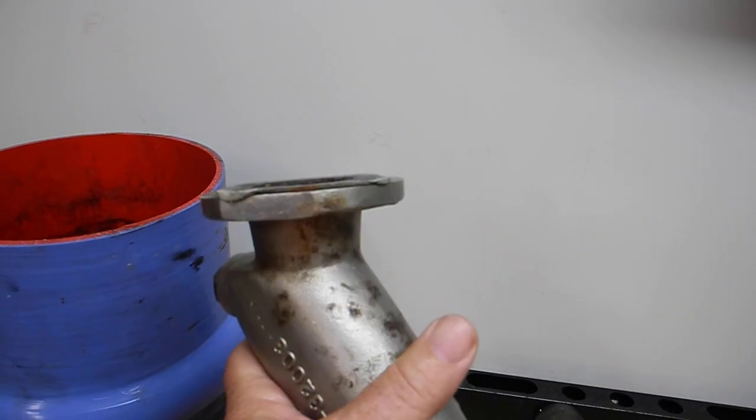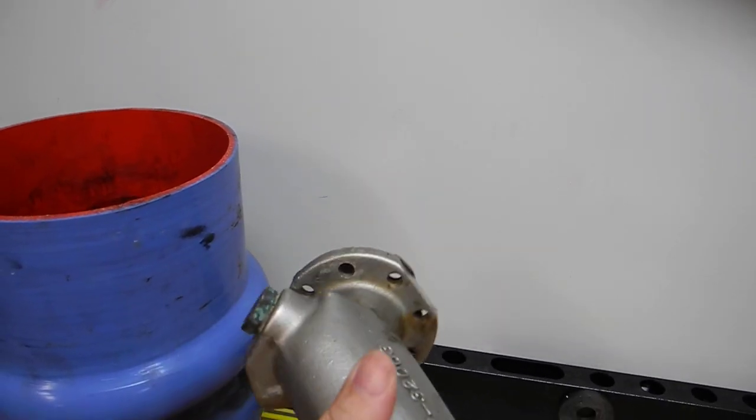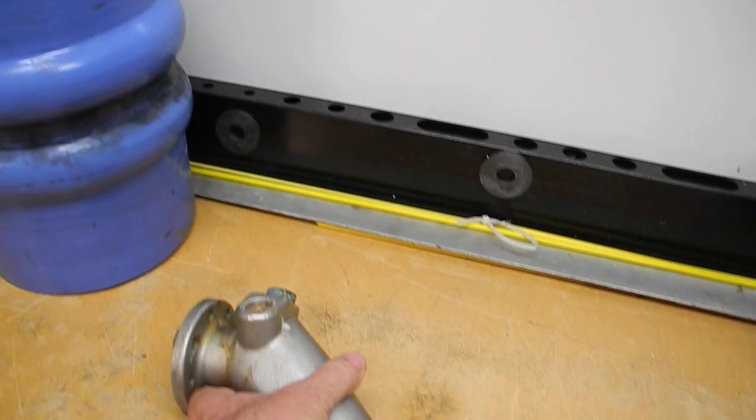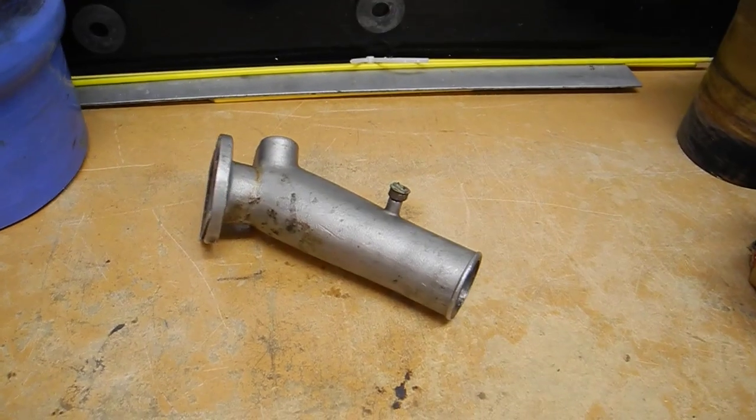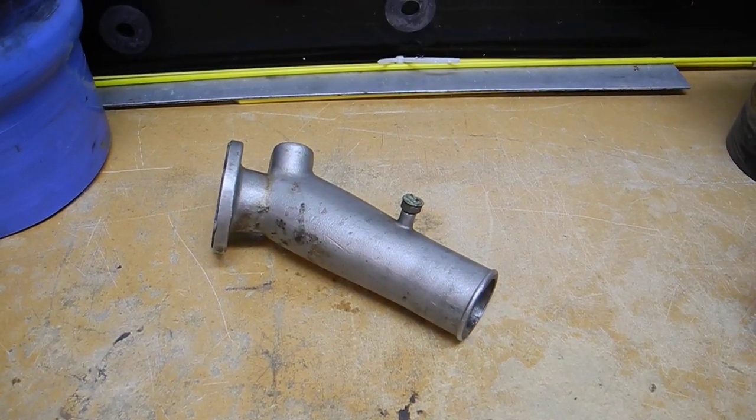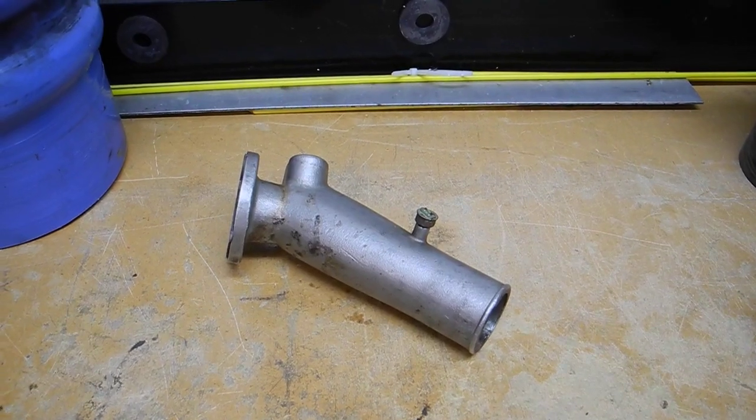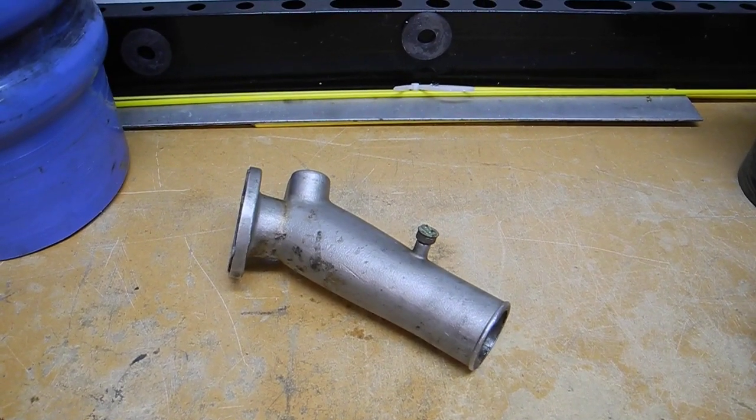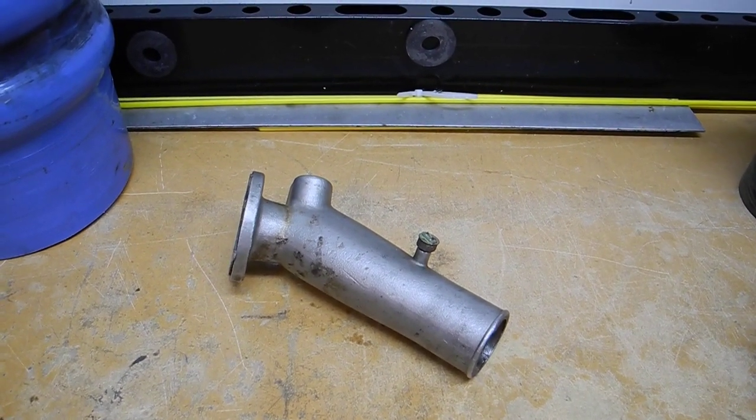This was replaced, proactively replaced, because if the exhaust elbow leaks water, it doesn't leak water into the bilge. It leaks it down onto the electrical armature of the generator, so you've got a fire hazard.